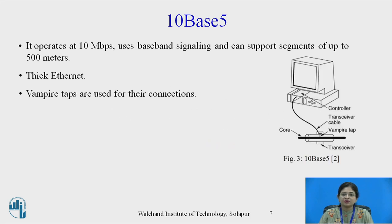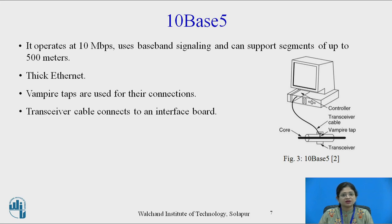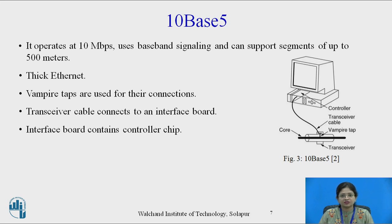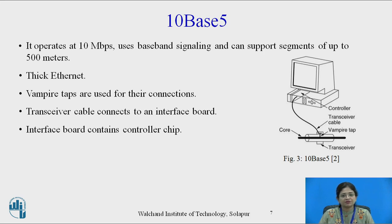In detail, a vampire tap is used for the connection. This vampire tap is inserted into the core of the coaxial cable, and the other end of the transceiver cable is connected to the interface board, where the controller chip is present. The controller chip has various responsibilities: it checks whether frames are transmitted to and from the transceiver, computes the checksum, and maintains a pool of buffers to check whether outgoing and incoming frames are present.